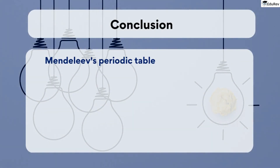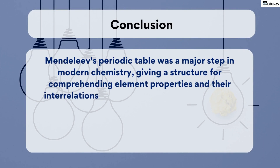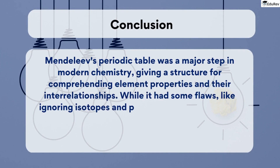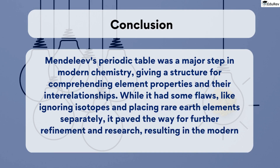To conclude, Mendeleev's periodic table was a significant milestone in the development of modern chemistry, providing a framework for understanding the properties of elements and their relationship to each other. Although it had some shortcomings, such as not accounting for isotopes and placing rare earth elements in a separate table, his work laid the foundation for further research and refinement, leading to the modern periodic table we use today.